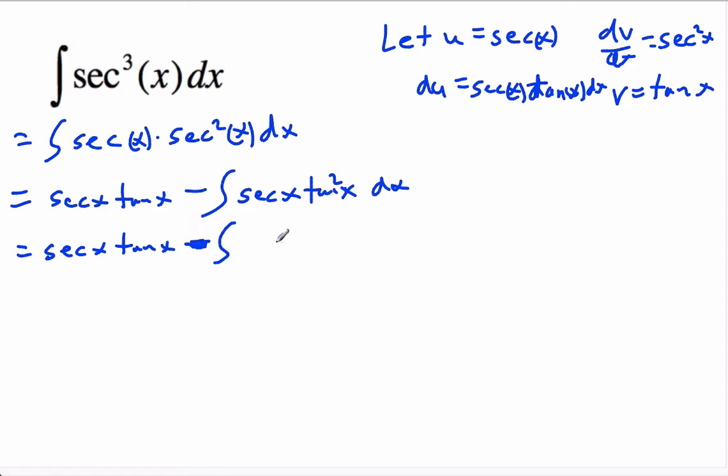This should be a minus sign there. So we're going to have secant squared x minus 1.